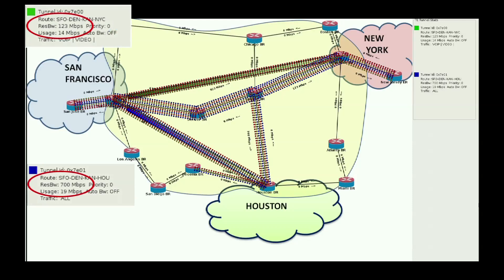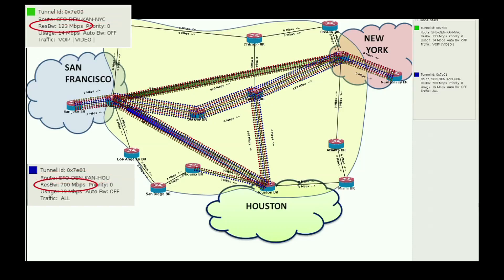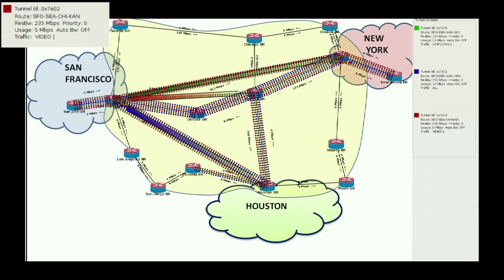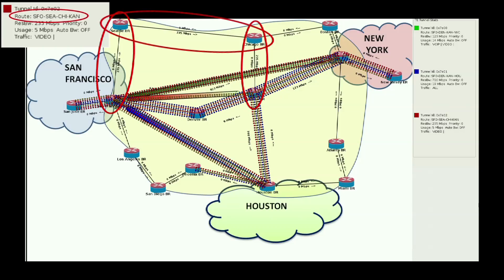Characteristics of the tunnels can be gleaned from the sidebar, such as the route the tunnel takes over the physical links, the bandwidth each tunnel reserves, and the current utilization of the tunnel. We see that the two tunnels created are still routed over the San Francisco, Denver, Kansas links, but the cumulative bandwidth reserved on those links is 823 Mbps. That leaves only 77 Mbps of unreserved bandwidth on those links. So if we try to create another tunnel between San Francisco and Kansas with a bandwidth reservation greater than 77 Mbps, the traffic engineering algorithm forces the tunnel and the traffic it carries to be routed over the underutilized links between San Francisco, Seattle, and Chicago.